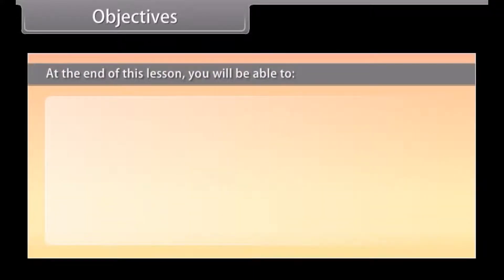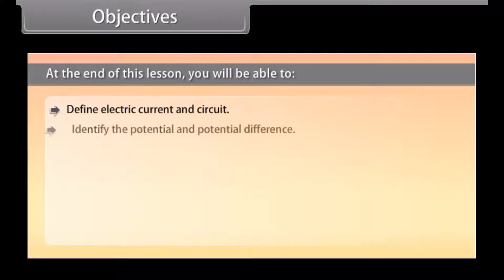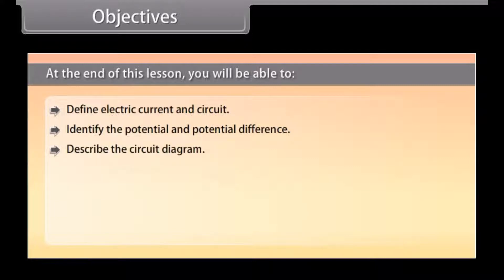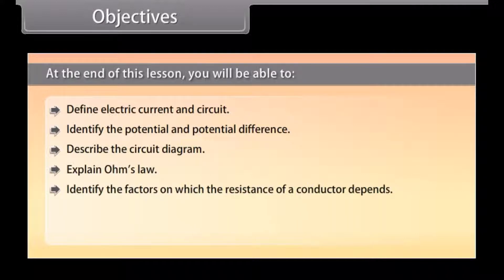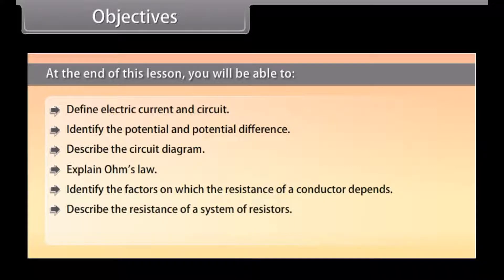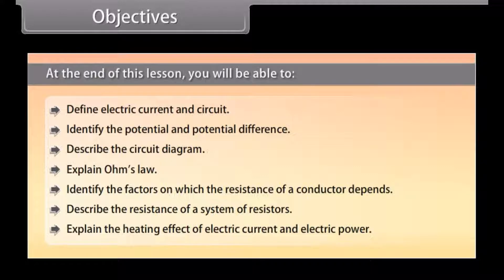At the end of this lesson, you will be able to: define electric current and circuit; identify the potential and potential difference; describe the circuit diagram; explain Ohm's Law; identify the factors on which the resistance of a conductor depends; describe the resistance of a system of resistors; and explain the heating effect of electric current and electric power.